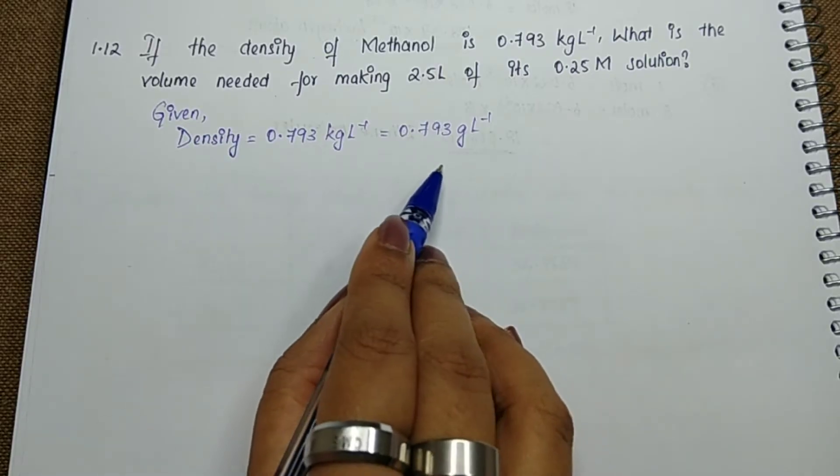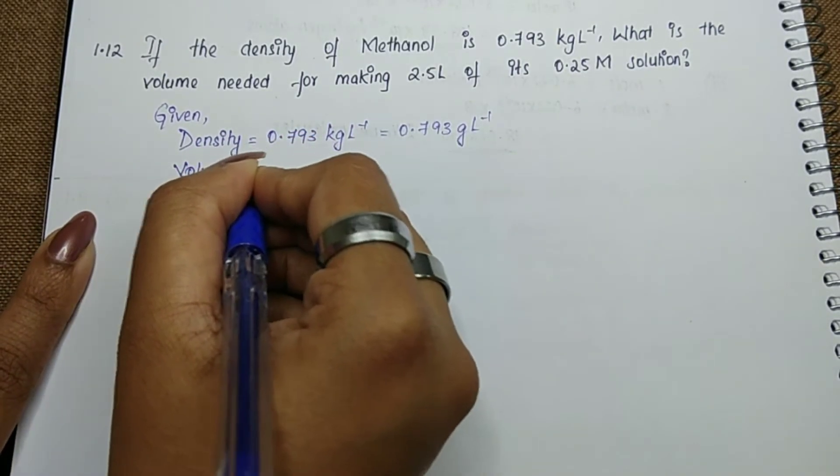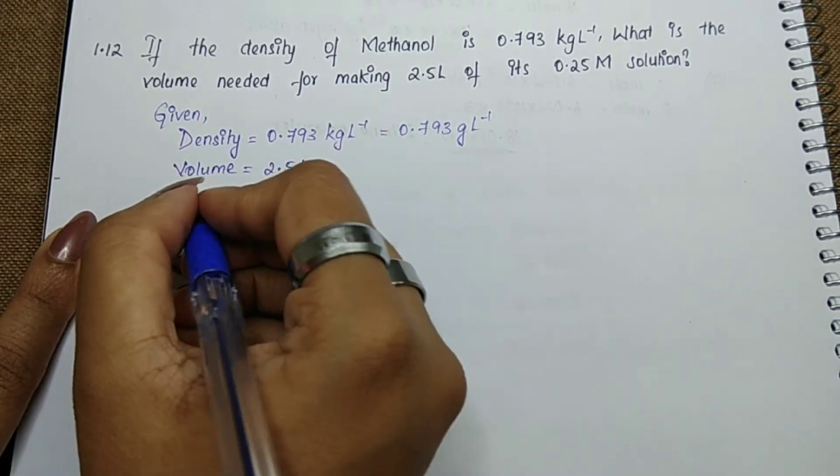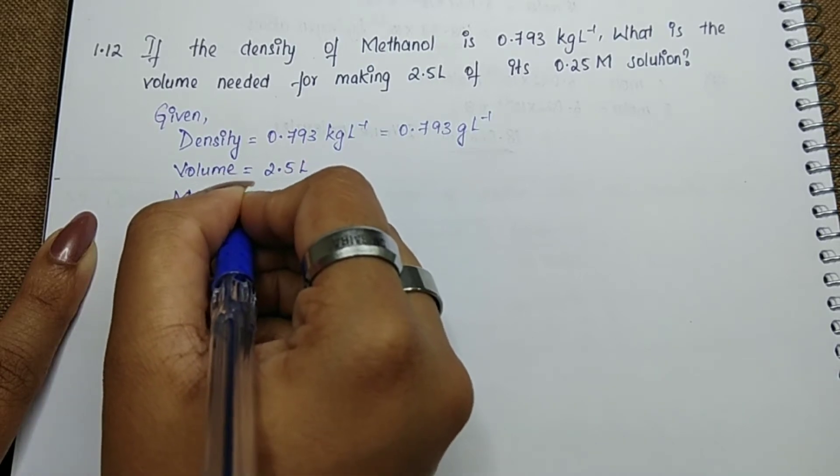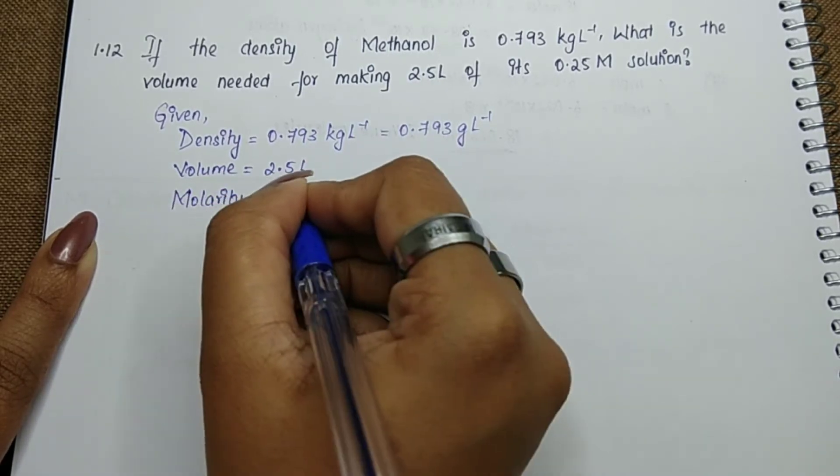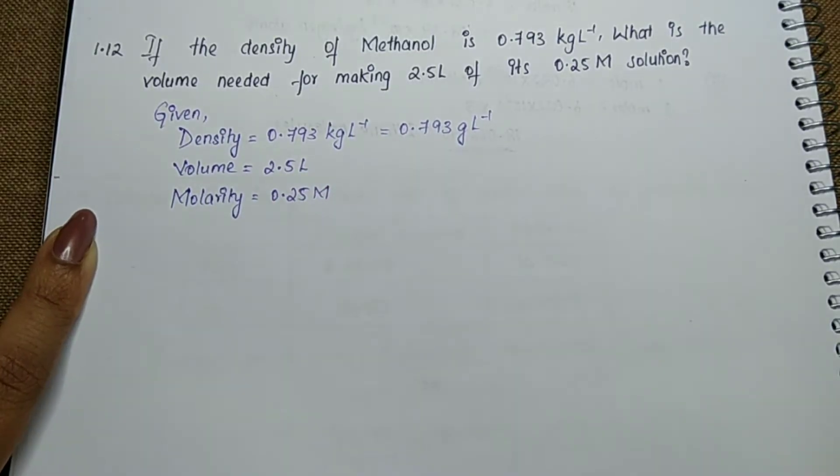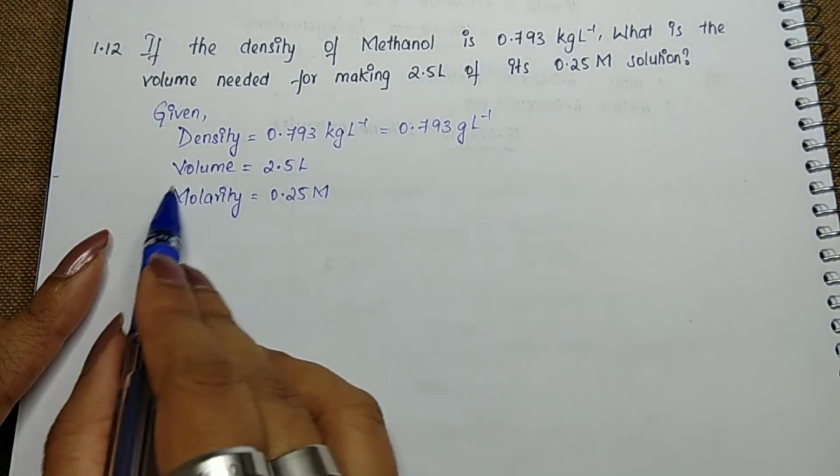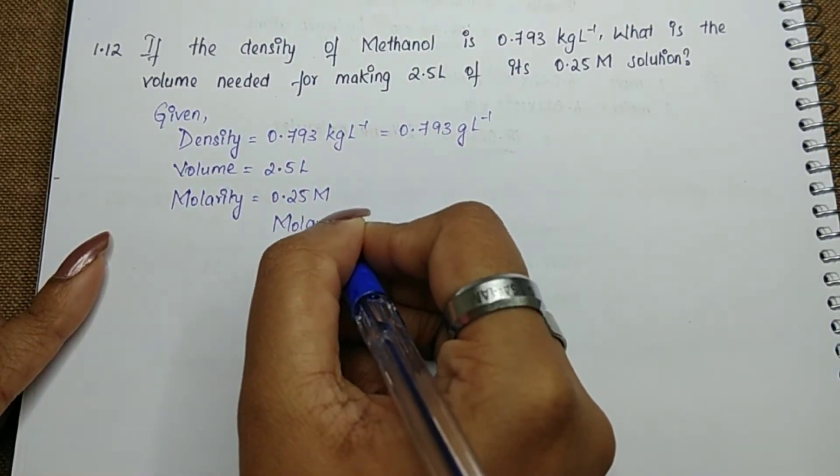Volume is 2.5 liter and molarity is 0.25 molar solution. Now since molarity is mentioned, let's write down the formula for molarity.